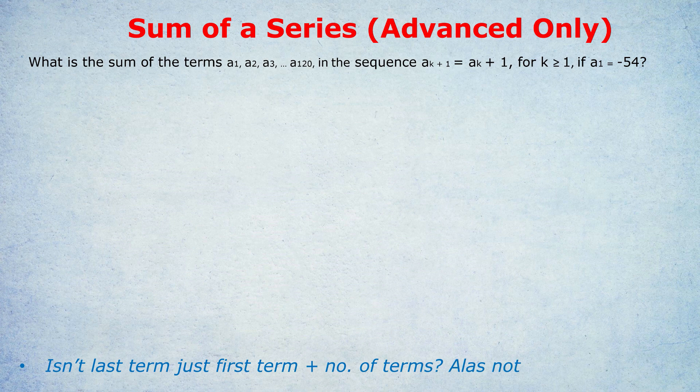As I said, again, I've got a video on sequences if you're not sure what the language means. Either way, how do we find the last term? Some of you are going to put your hand up and go, well, wouldn't the last term just be minus 54 plus 120, right? Because there's 120 terms. Not quite. Even though there are 120 terms, we only add on 119. We always add on one less than the number of terms.